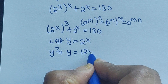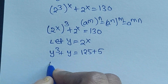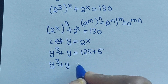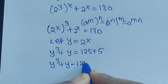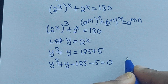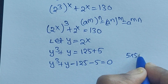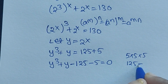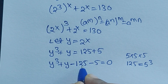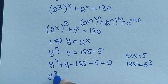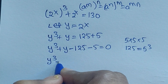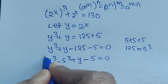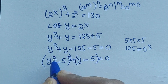So 2 to the power of 3x is y cubed, giving us y cubed plus y equals 130. We can write 130 as 125 plus 5, so rearranging: y cubed minus 125 plus y minus 5 equals 0. Now 125 equals 5 cubed, so in place of 125 we write 5 cubed.